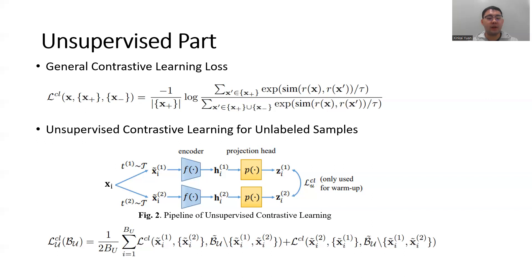Thus, yielding this loss function below. This contrastive learning loss is only active in the warm-up stage, since the assumption that all other augmentations are negative pairs here is too general and conservative, so it is better not to use it in the whole training process.